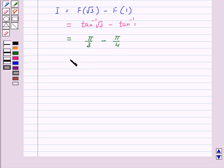So this is equal to, taking 12 as the common denominator, 4 pi minus 3 pi, which is equal to pi by 12.